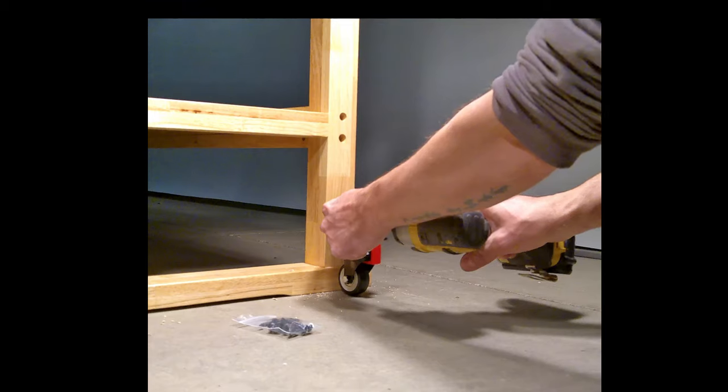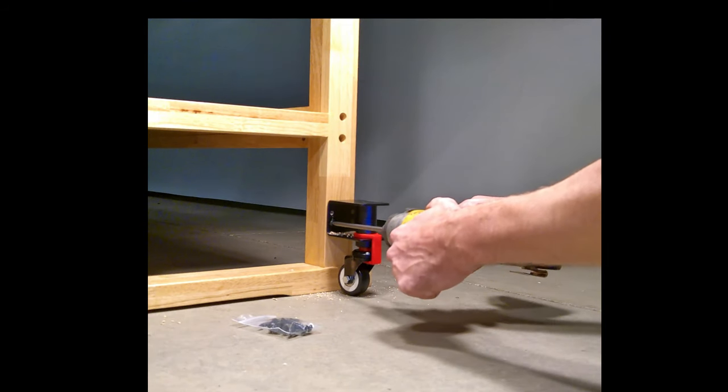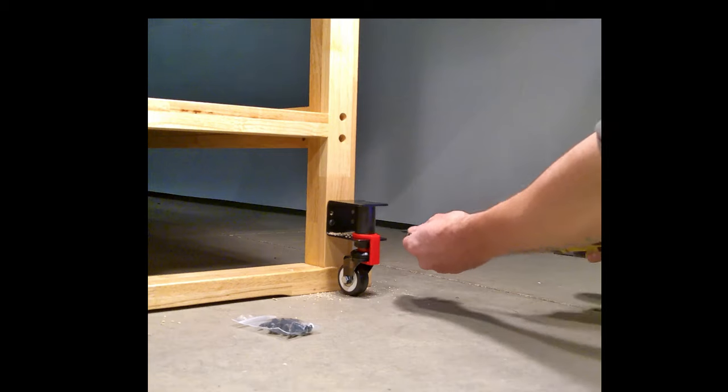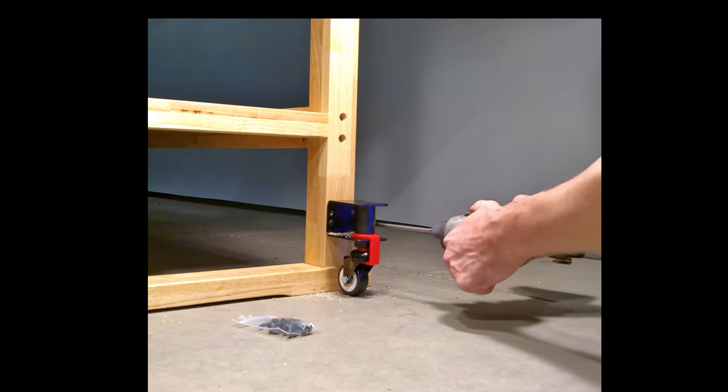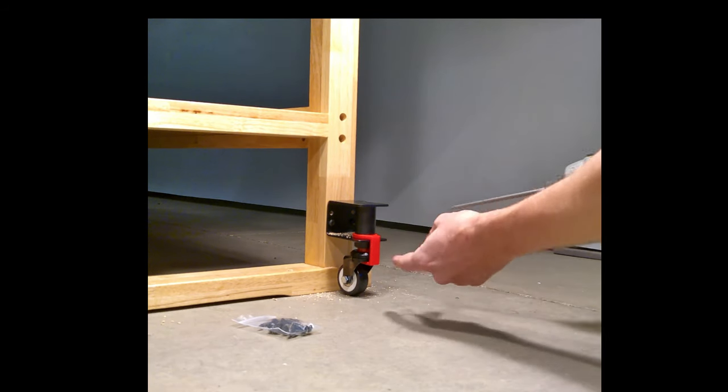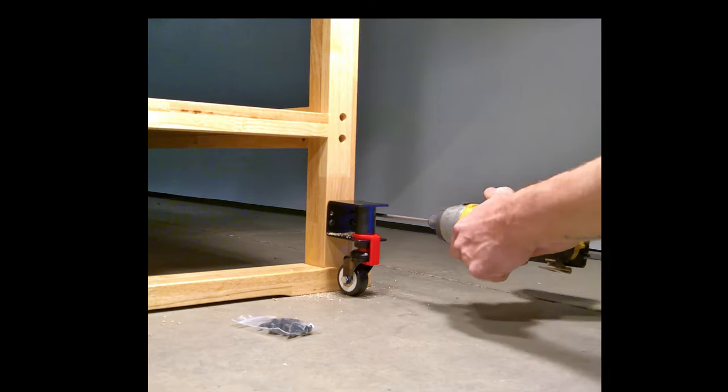Insert the square head extension that's included in your hardware pack into your drill. Locate the screw pack containing the mounting screws and insert the four screws into the pre-drilled holes, taking care not to over-tighten.